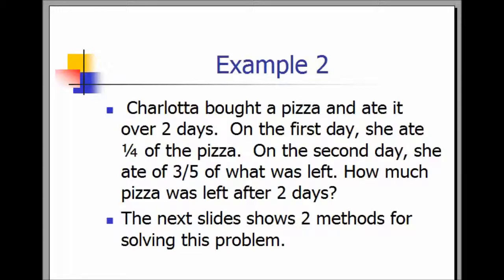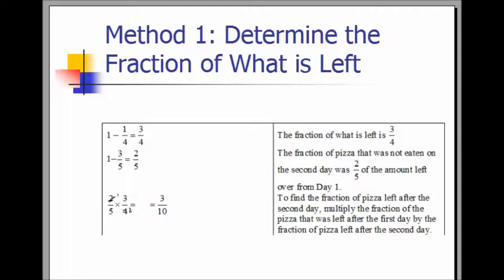The next two slides show two methods for solving this problem. Method 1: Determine the fraction of what is left. If Charlotte ate one-fourth of the pizza on the first day, one minus one-fourth equals three-fourths, and three-fourths of the pizza is left. The fraction of pizza that was not eaten on the second day was two-fifths of the amount left over from day one. We got the two-fifths because that's one minus three-fifths.